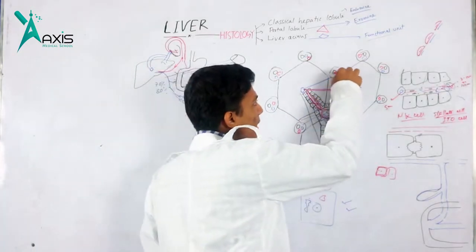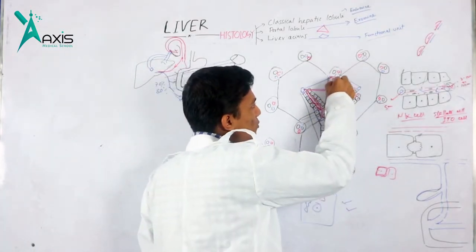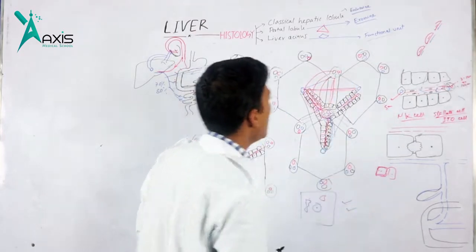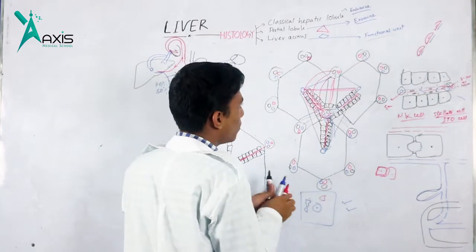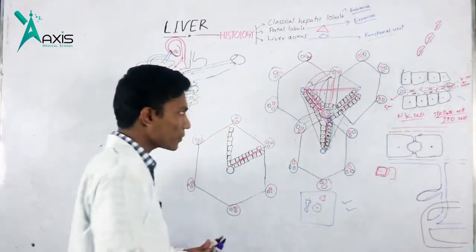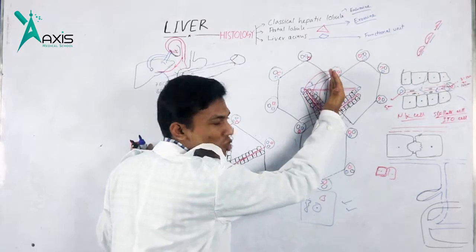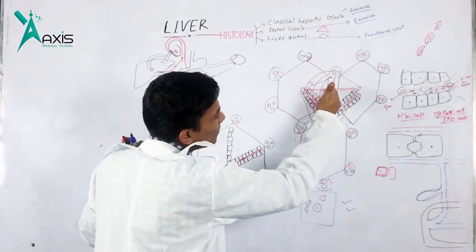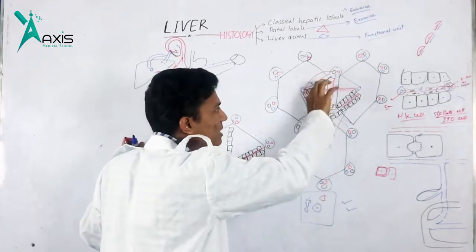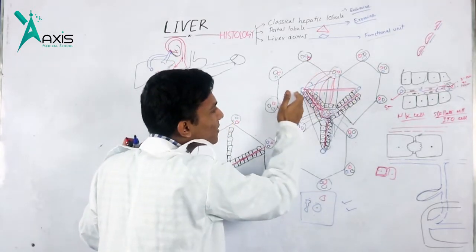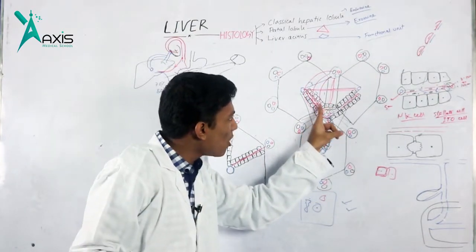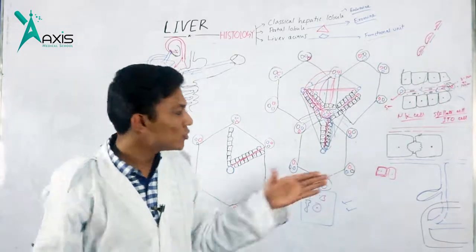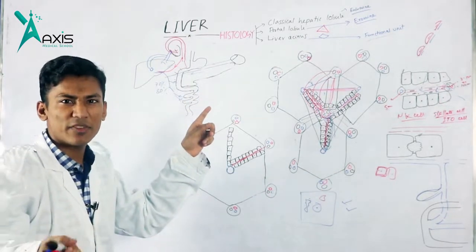These two portal triads define three zones within the liver acinus. Zone 1 is adjacent to the portal triad along the short axis, zone 2 is intermediate, and zone 3 is closest to the central vein. Zone 1 receives the most oxygenated blood and is most affected by inflammation and toxic materials when they enter through the portal circulation.